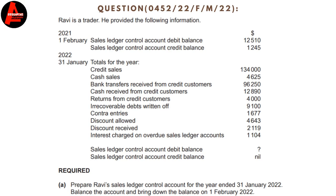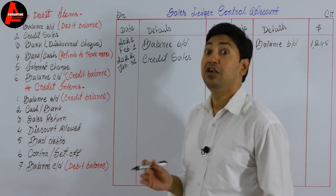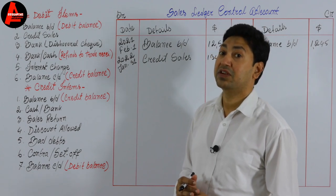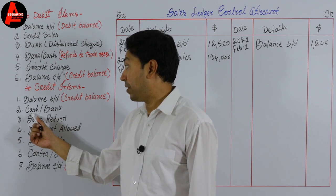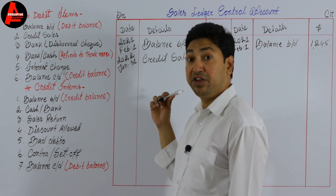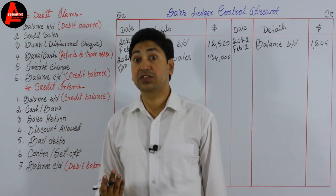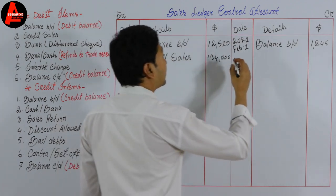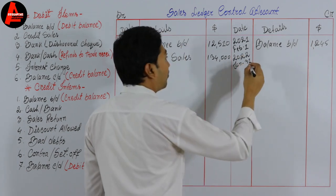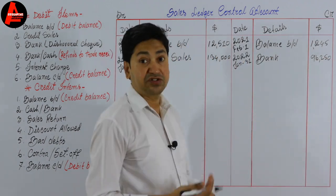Next we have bank transfers received from credit customers: $96,250. The business received money by bank transfer from a customer. Customer-related transactions are recorded here, but never include supplier-related transactions — those go to the purchase ledger control account. Payments received by cheque or bank transfer are recorded on the credit side as 'bank.' So we write 2022, January 31st, bank: $96,250.